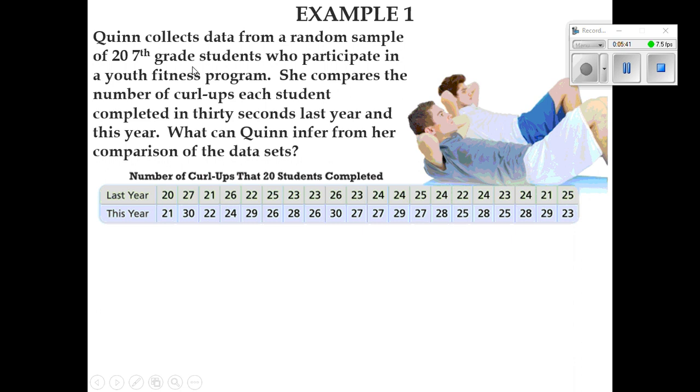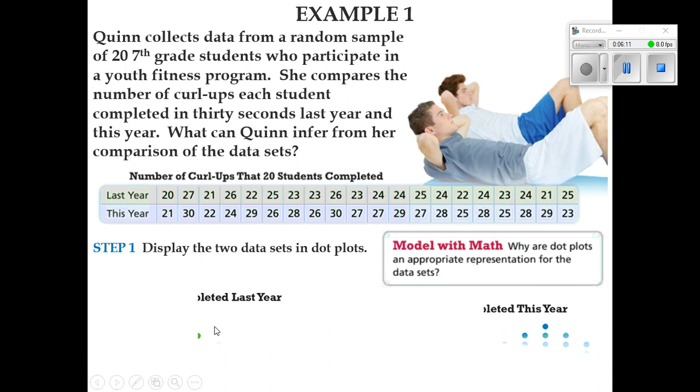So when you're talking about how to best describe data, the means is the average of all of the values of the data set, but the means is affected by outliers. So when the data set has outliers, the median better describes the center because the median was 3.5 in this one and only three in the other. So that means we were only off by about 0.5. We stayed really closer to the truth there. Next, we got Quinn collects data from a random sample of 27th grade students who participate in youth fitness program. She compares the number of curl-ups each student completed in 30 seconds last year and this year.